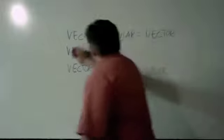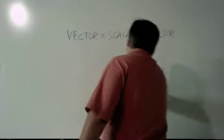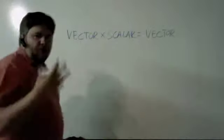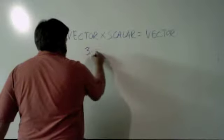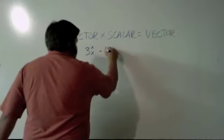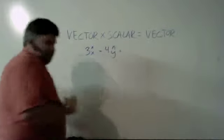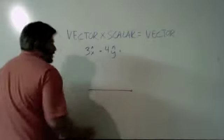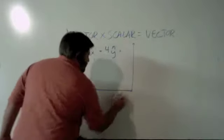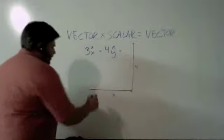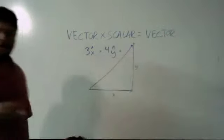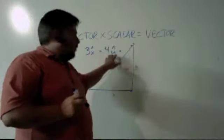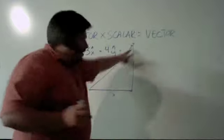So a vector multiplied by a scalar. Take the example of, now we know it's a vector when we have something like this notation: 3x hat plus 4y hat. So all that means is that I'm going 3 in the positive x direction, 4 in the positive y direction, giving me a resulting vector like that. That's vector addition.